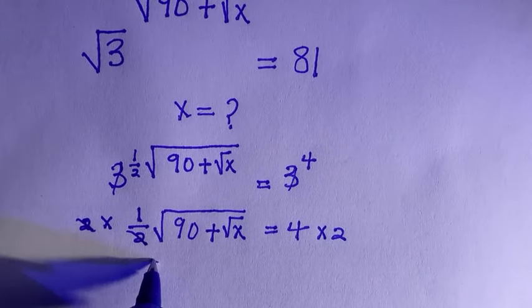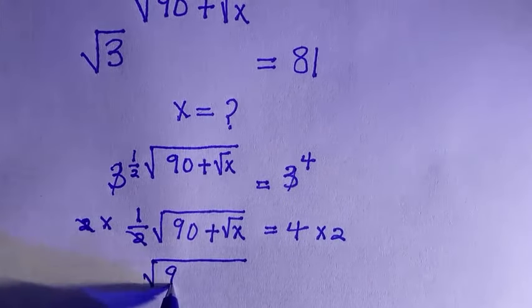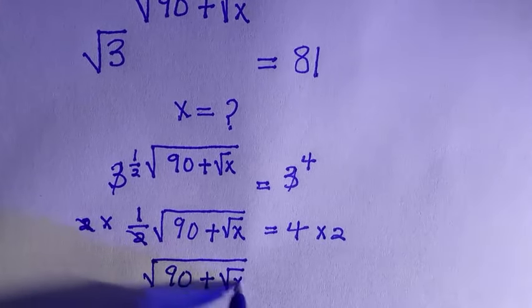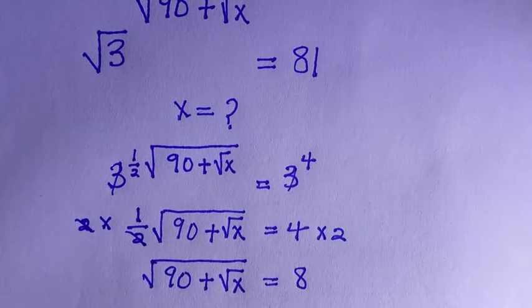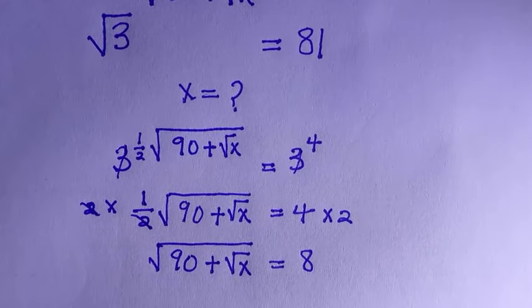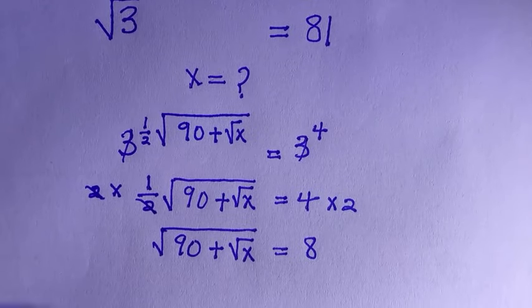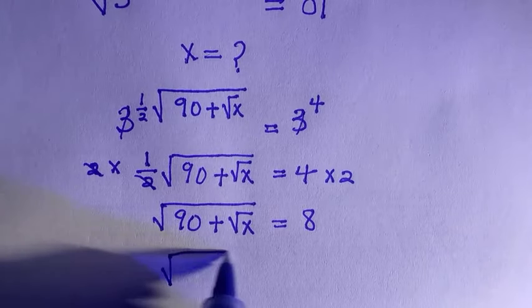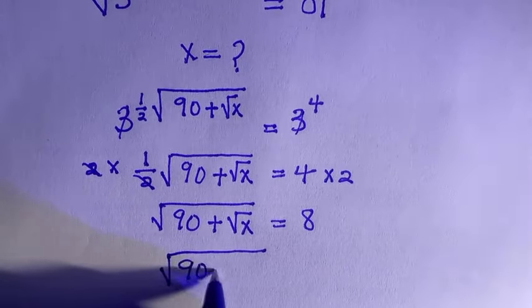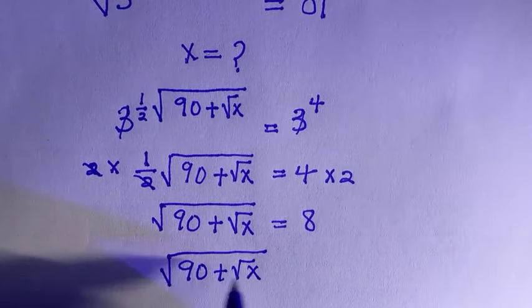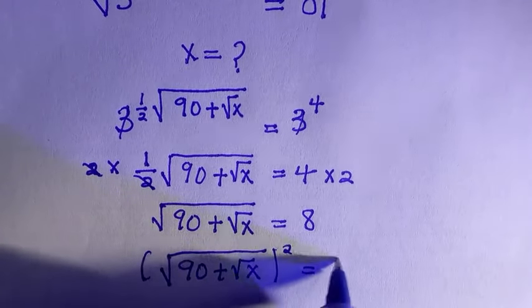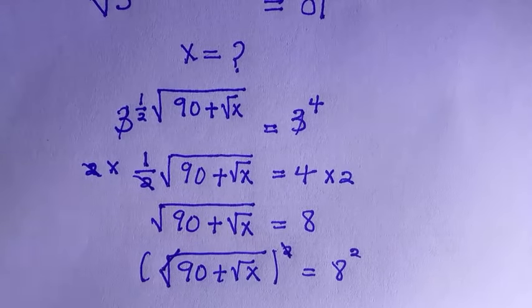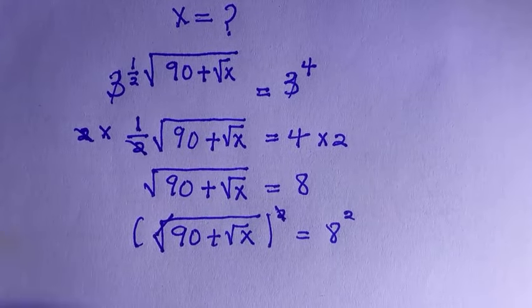And I will say I have another root in this. If I take the square of both sides for the second time, this square root will cancel it. Then we are going to have 90 plus root x, and everything equals to 64.